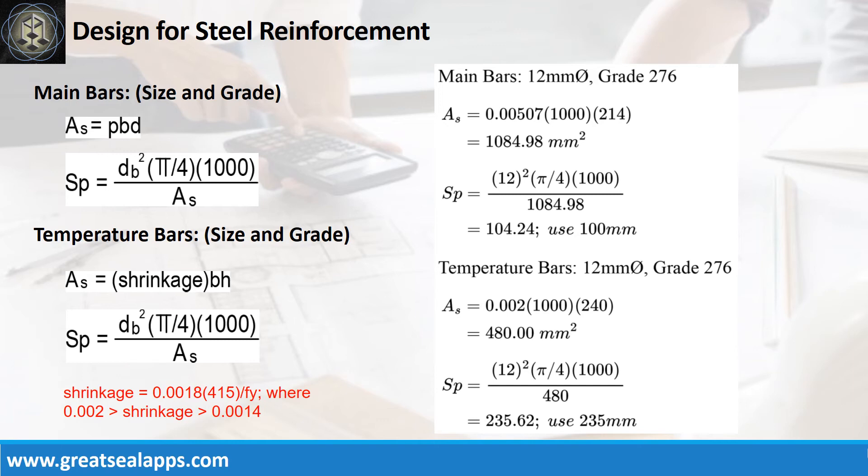The area of steel for temperature bars is 480 square millimeters and the spacing for 12 millimeter bar is 235 millimeters.